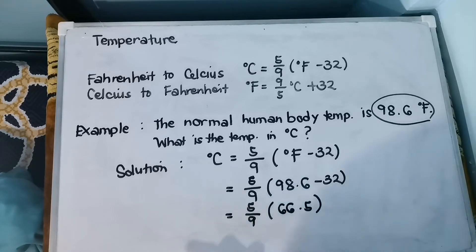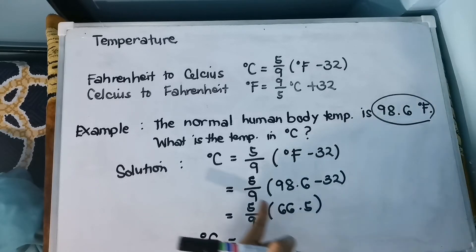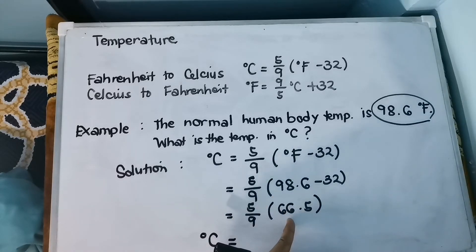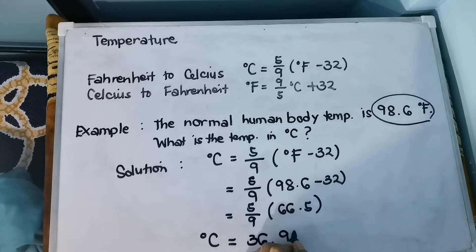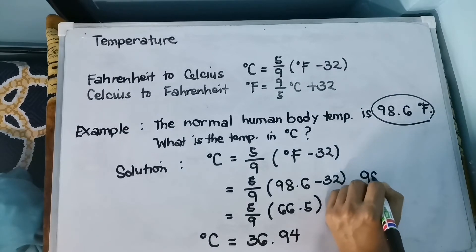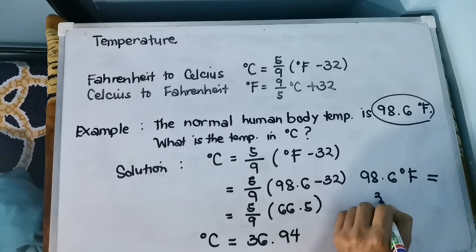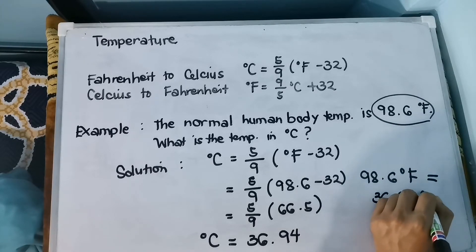98.6 minus 32 gives us 66.5. We then multiply 66.5 by the numerator 5 and divide by the denominator 9. So 5 times 66.5 divided by 9 gives us 36.94. Therefore, our final answer is 36.94 degrees Celsius — meaning 98.6 degrees Fahrenheit is equal to 36.94 degrees Celsius.